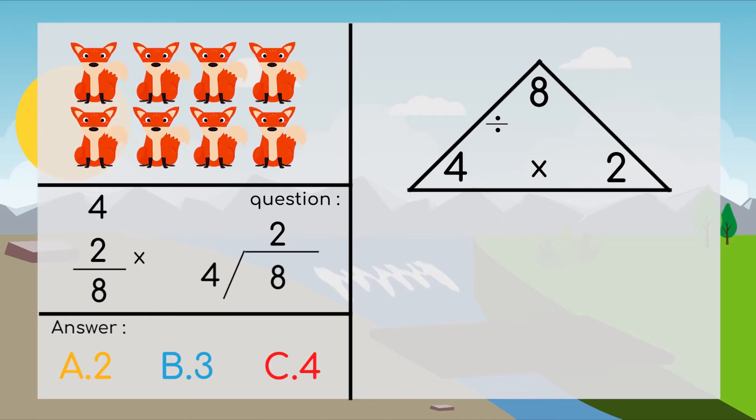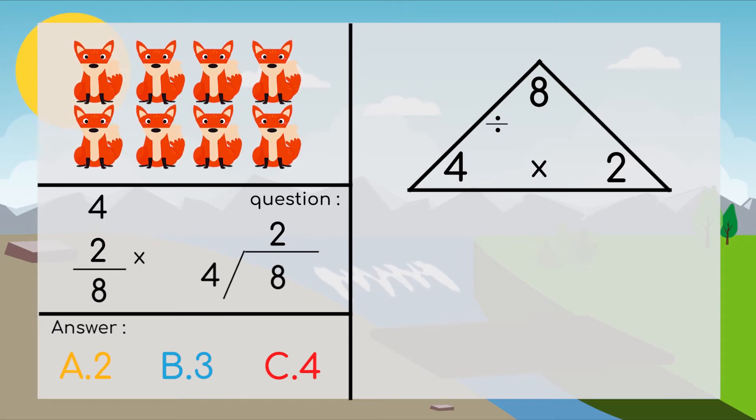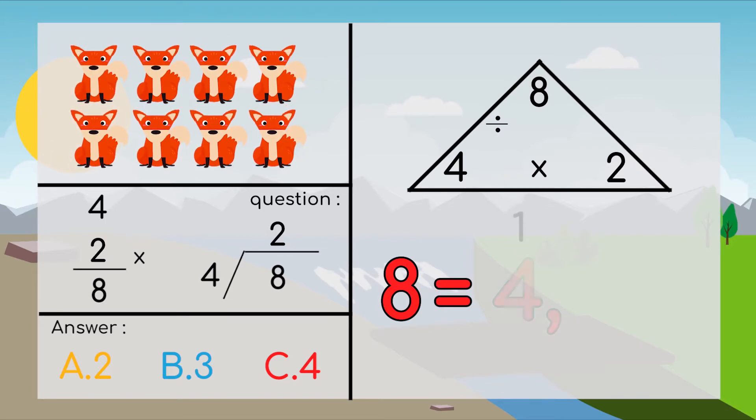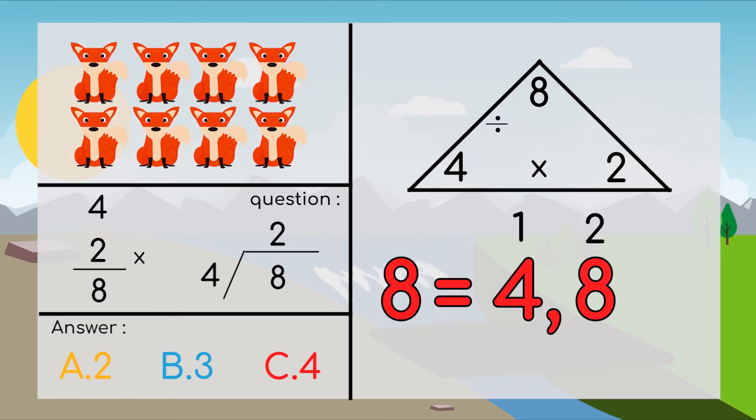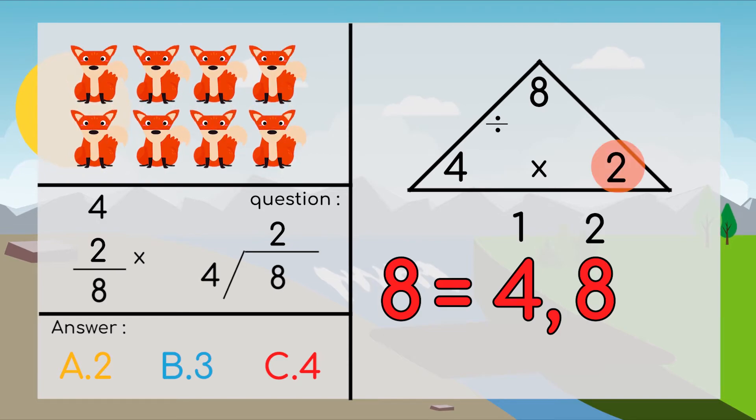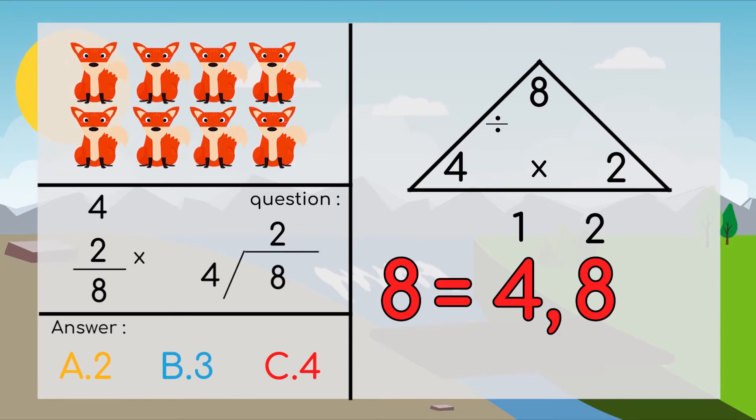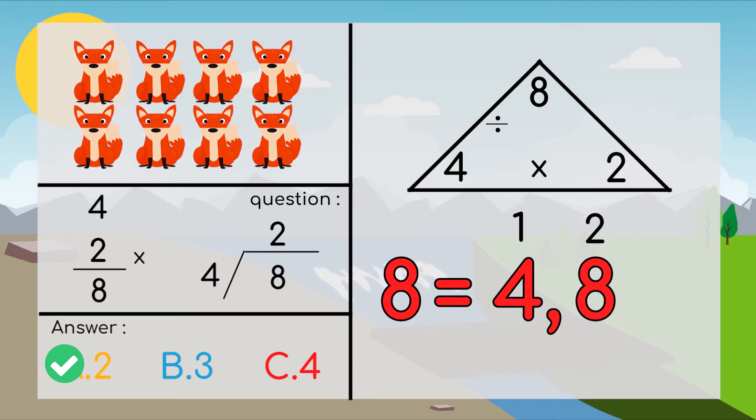But if you realize, when we use the skip count method, we actually did a division for our problem. Because we got our total number here and start dividing them by skip count 4 until we got our total number and got an answer of 2. So let's check the correct answer here, which is 2.